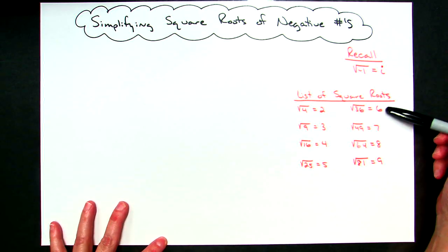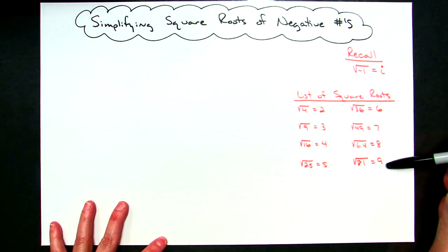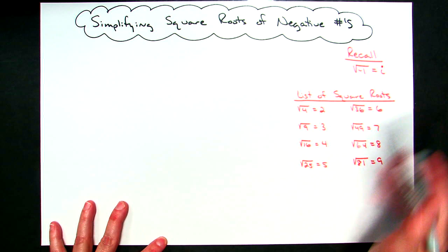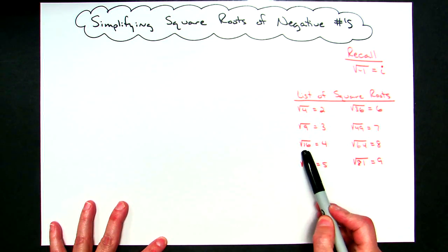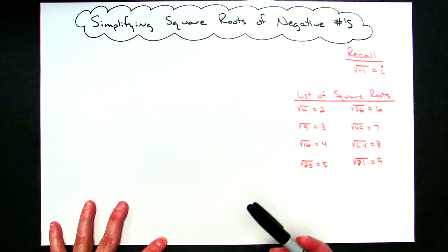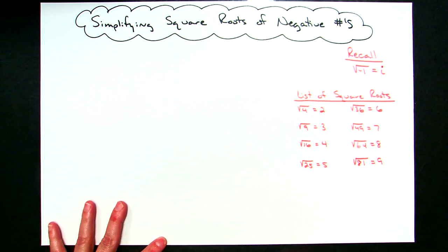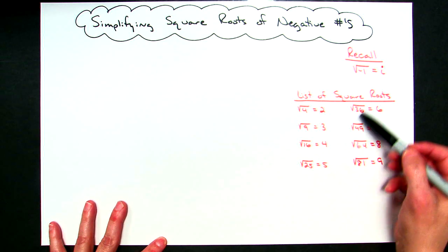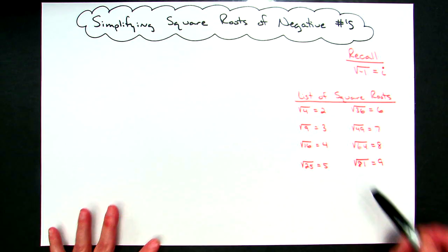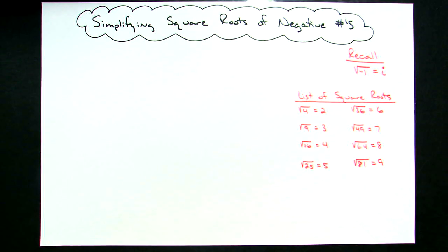If you use the biggest perfect square root — say, square root of 16 — that's the biggest number, it's going to make your simplifying go a lot faster. So I've written all our perfect square roots over here so that we've got a list to choose from.